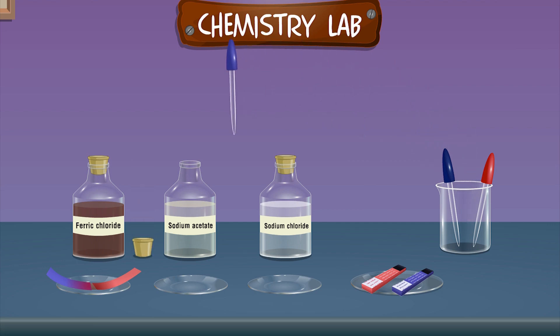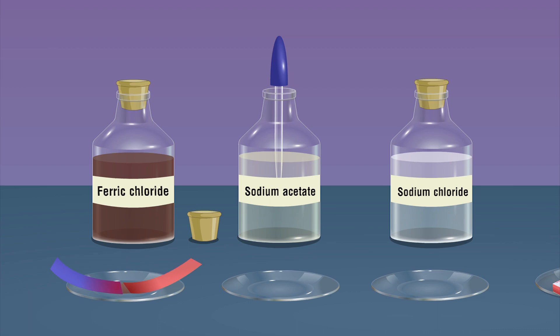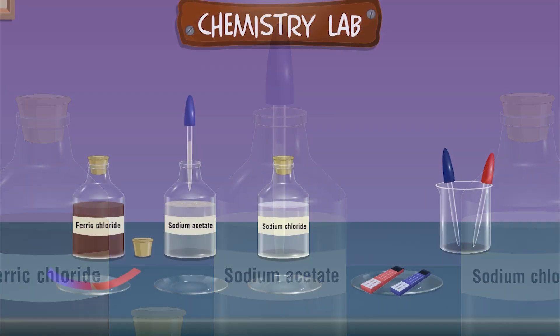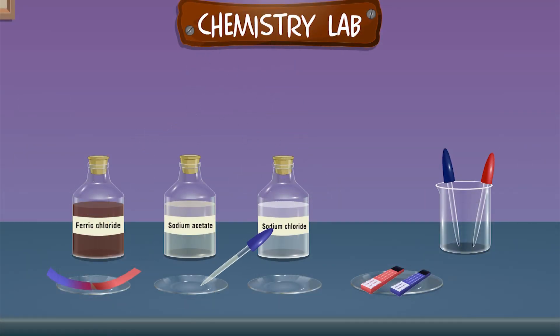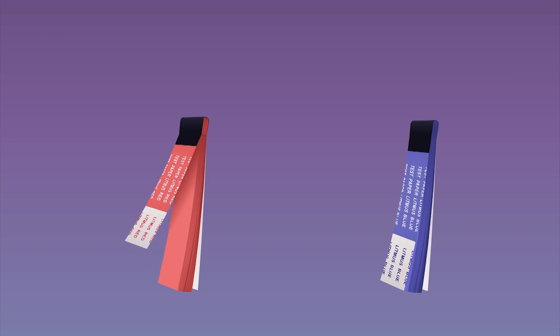Take about 1 ml of sodium acetate solution in a watch glass. Take a piece of blue and red litmus paper and dip it in the solution.